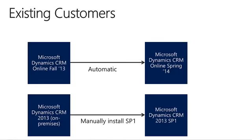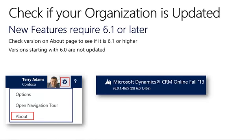If your organization uses Microsoft Dynamics CRM 2013 on-premises, your administrator must install Service Pack 1 before the new features can be installed and enabled. If you're not sure if your organization has been updated to Microsoft Dynamics CRM Online Spring 14 or Microsoft Dynamics CRM 2013 Service Pack 1, you can click the settings icon and then click About to verify your version. If the version starts with 6.0, your organization has not been updated; if it starts with 6.1, it has been updated.